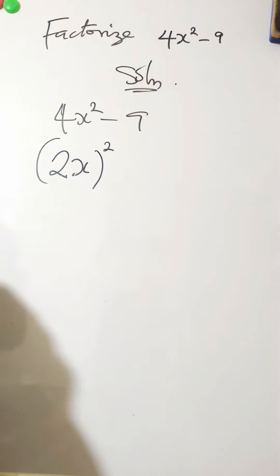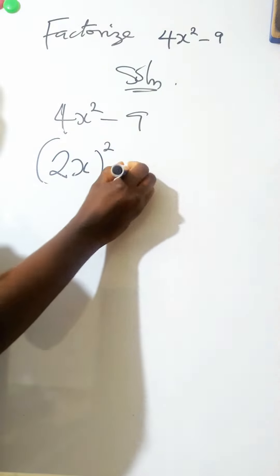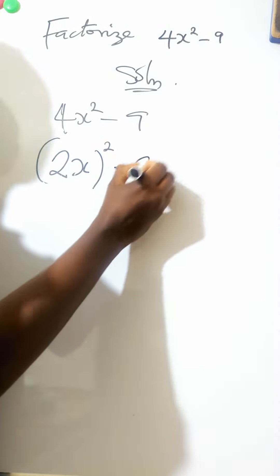Right, because if you open this bracket, 2 squared is 4, x squared is x squared. Minus 9 can be written as 3 squared.